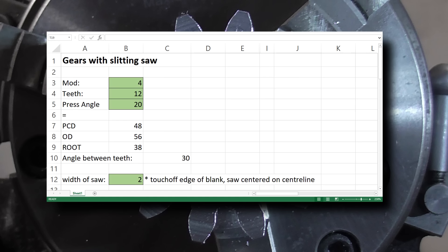All I need to enter is the module size, the number of teeth, the pressure angle of the gear (20 degrees is standard), and the width of the saw I'm using. The dimensions of the gear are calculated automatically, and the cuts are generated.